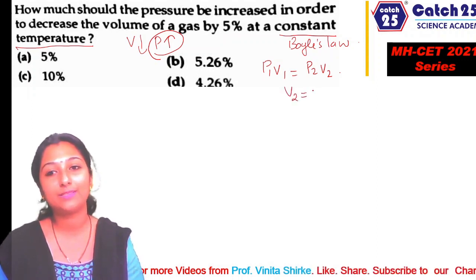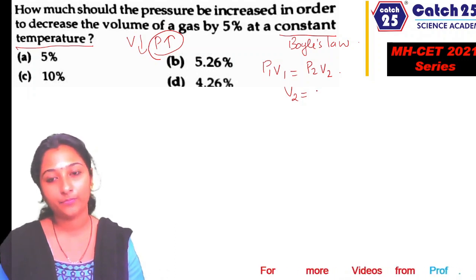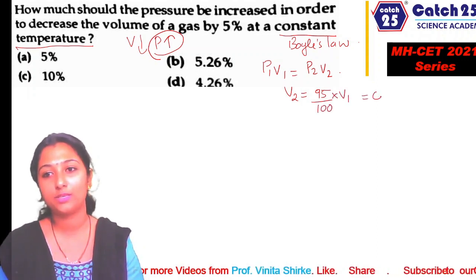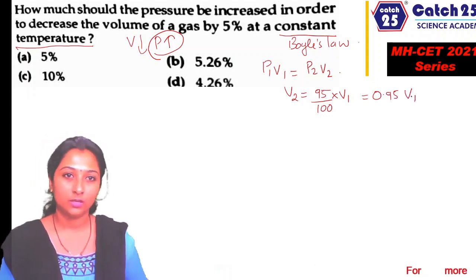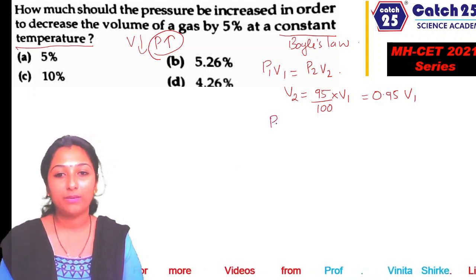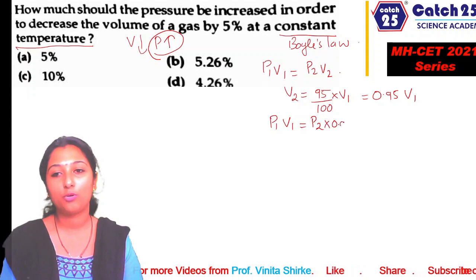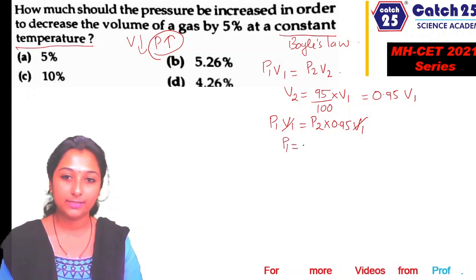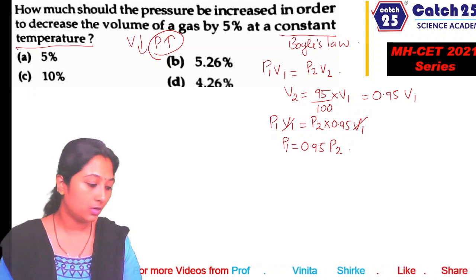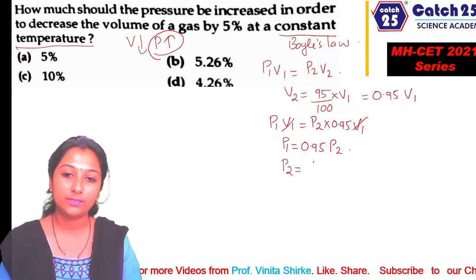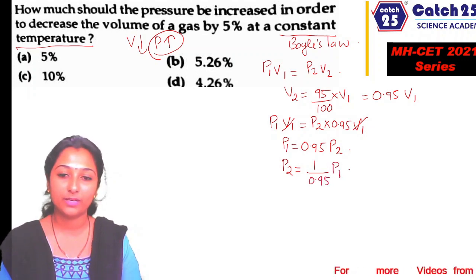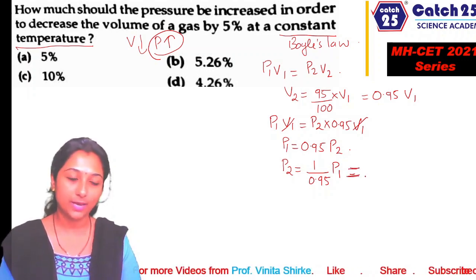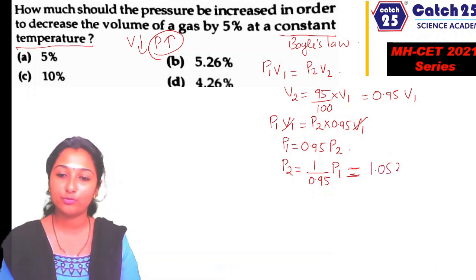V2 is 5% decreased, so V2 = (100 - 5)/100 × V1 = 0.95·V1. Substituting into Boyle's law: P1·V1 = P2 × 0.95·V1. V1 cancels, giving P1 = 0.95·P2, or P2 = 1/0.95 × P1 = 1.052·P1.